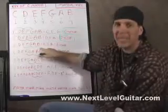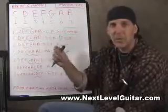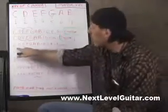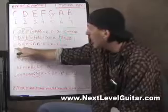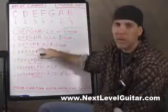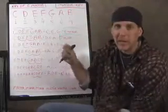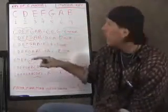A scale is written out in order because a scale is a series of notes from the root in order to its octave. You will always see scales in order.